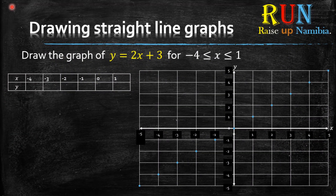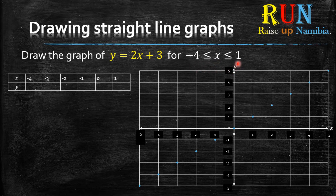Here we are told: draw the graph of y equals 2x plus 3, and we are given a condition where x is equal to or between negative 4 and 1. So what do you do? You create a table. Let's start with the table method first.